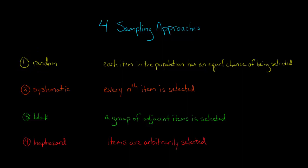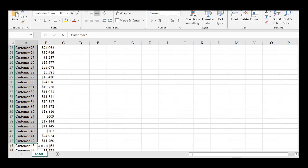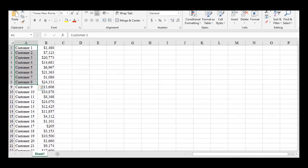So let's go through each one of these in turn. Random sampling, we're saying each item in the population has an equal chance of being selected. What does that mean? So let's take an example. Let's say we've got here a list of customers, and I have 100 customers in this list.